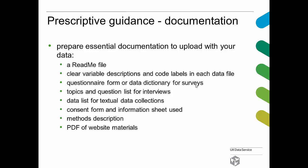We want clear variable descriptions and code labels in data files if we're talking about quantitative data. We want a questionnaire form or a data dictionary if the dataset results from surveys. If it results from interviews, we want to see topics and question lists. We want to have a data list for textual data collections, and the website guidance describes what a data list is, how to make one, and where to see good examples in the collection. We want to see a copy of the consent form and the information sheet that was given to participants, and a description of methods, etc.